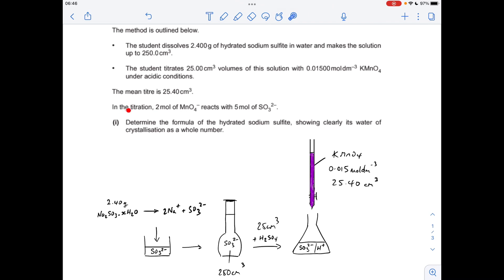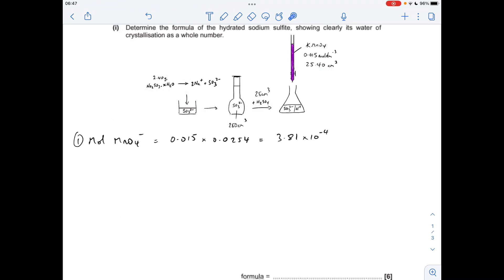That concentration, and that was the mean titre. We're not given the equation here, but we are told that the ratio is 2 moles of MnO4- to 5 moles of sulfite ions. So first thing we'll do: moles of MnO4- used in the titration, concentration times volume in decimeters cubed, 3.81 times 10 to the minus 4.